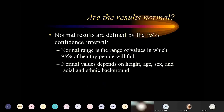Normal is defined as the 95% confidence interval — the range of values in which 95% of healthy people will fall. It depends on height, age, sex, and racial and ethnic background. We have fairly good normals for white individuals, African Americans, and Asians, though data is less complete for other ethnic backgrounds. Height is probably the most important factor — in our pulmonary function lab, we actually measure the patient rather than relying on self-reported height.